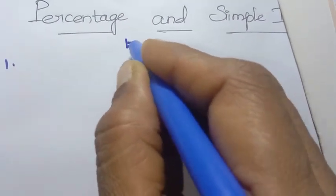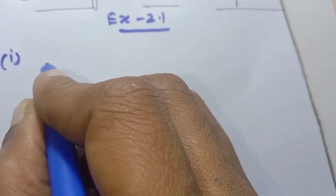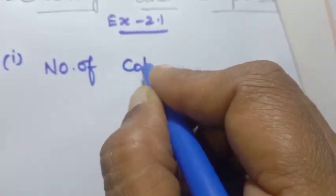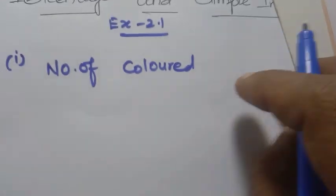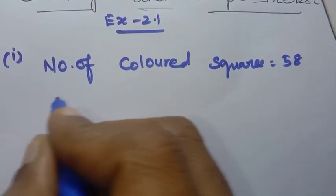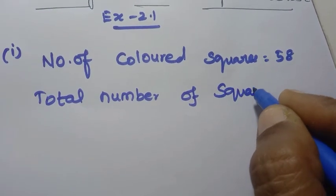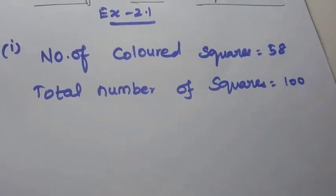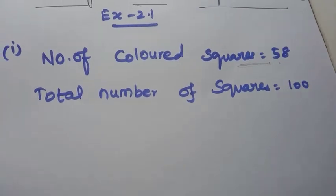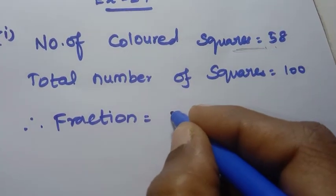Now let's work on Exercise 2.1, sum 1. The number of colored squares is 58. The total number of squares is 100. We have counted the colored squares as 58 out of a total of 100.